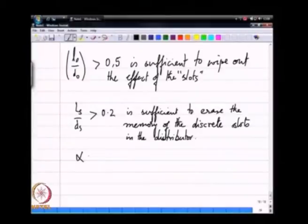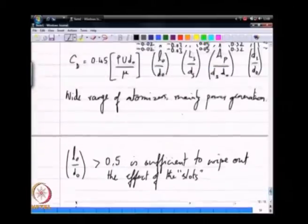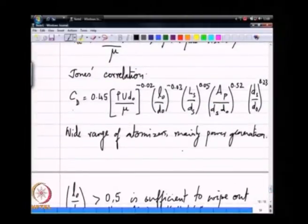Likewise, again in the same thing, alpha is usually on the order of about 90 degrees to about 120 degrees. Alpha happens to be the convergence angle going from the swirl chamber to the exit orifice. Again without any surprise CD is most influenced by this ratio AP over Ds D0.